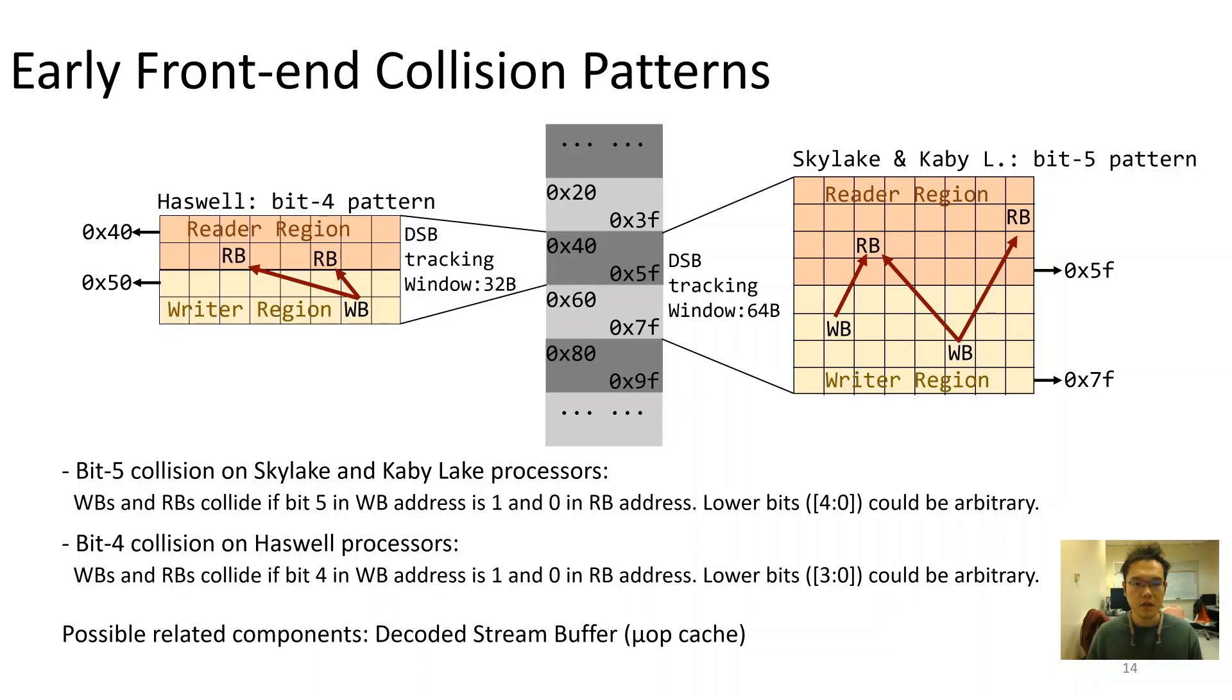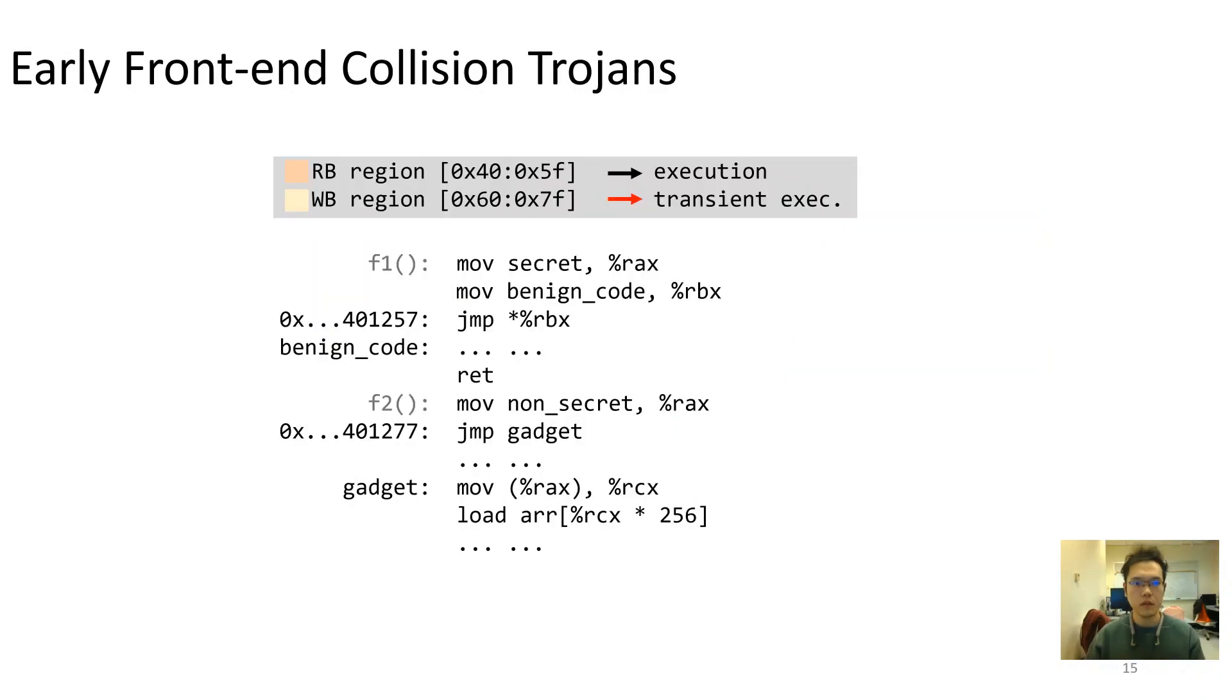For simplicity, we now refer this kind of collision anomalies as bit 5 collisions, or early frontend collisions.